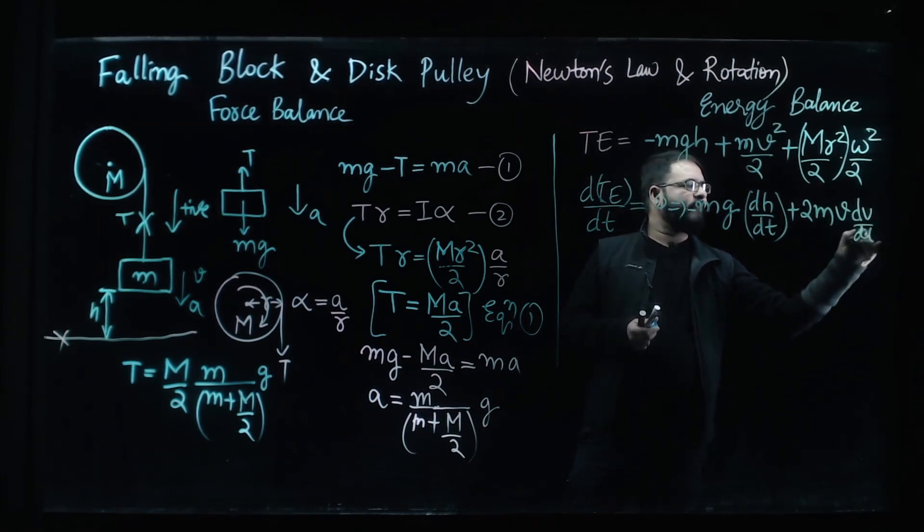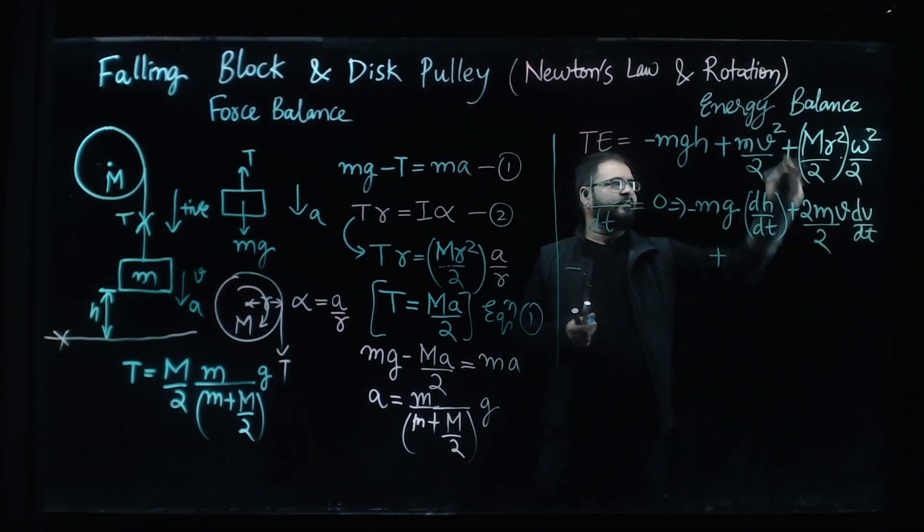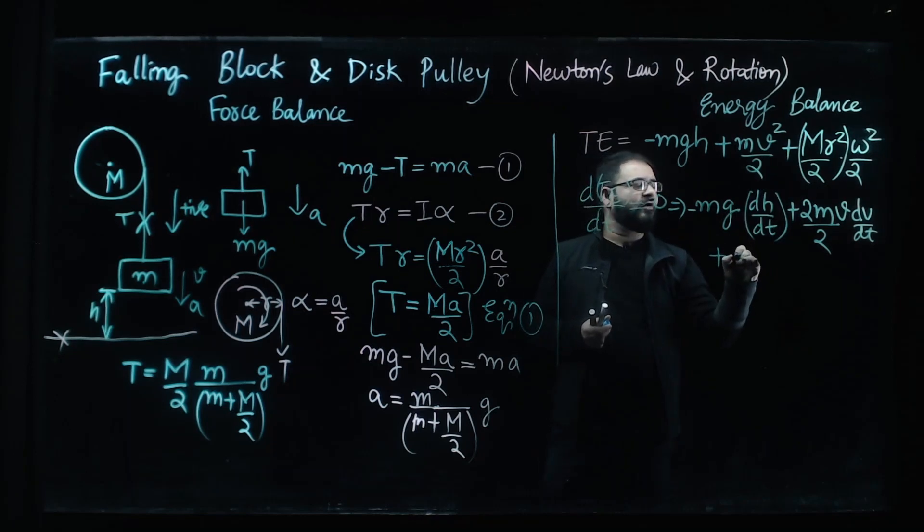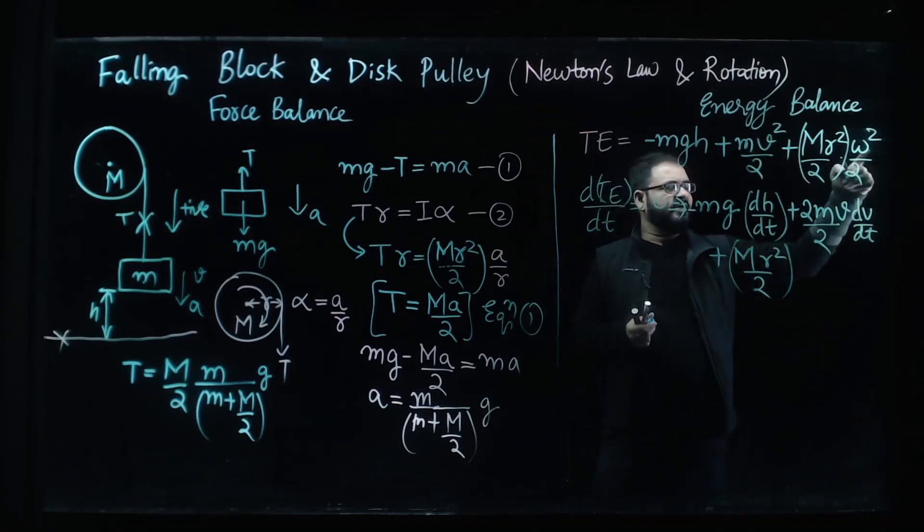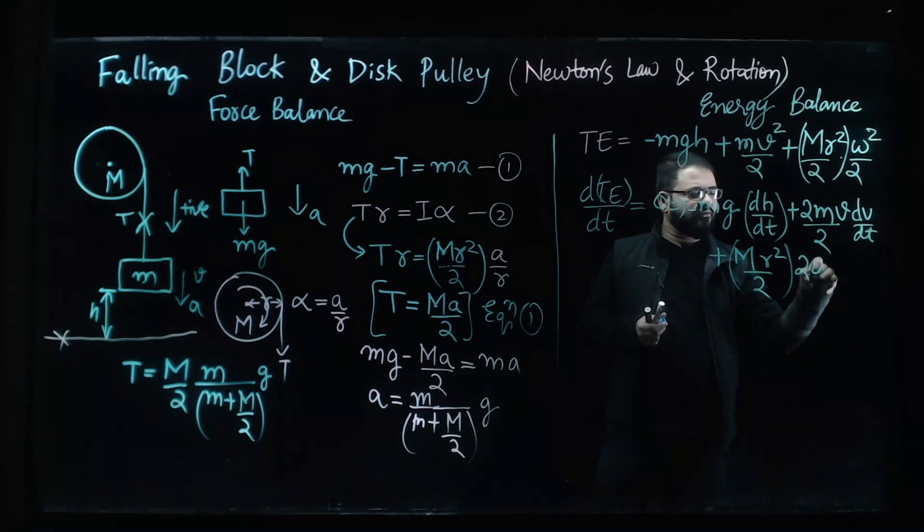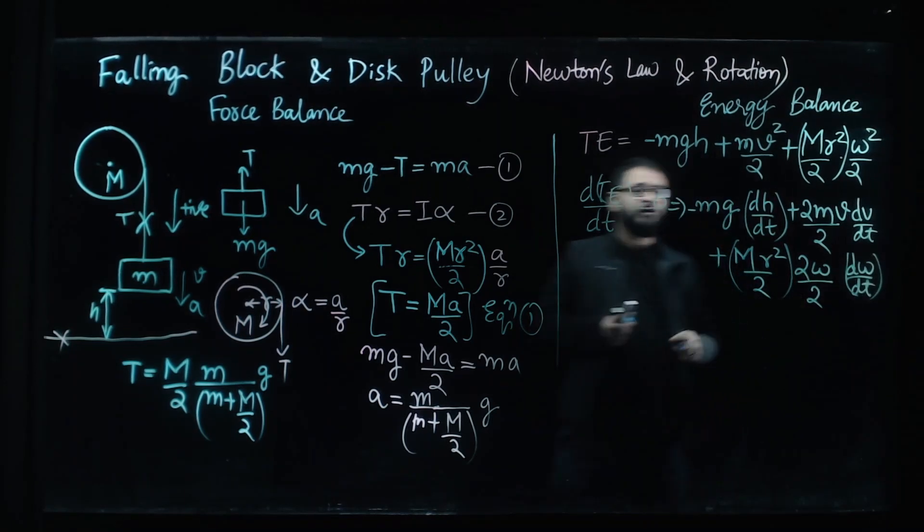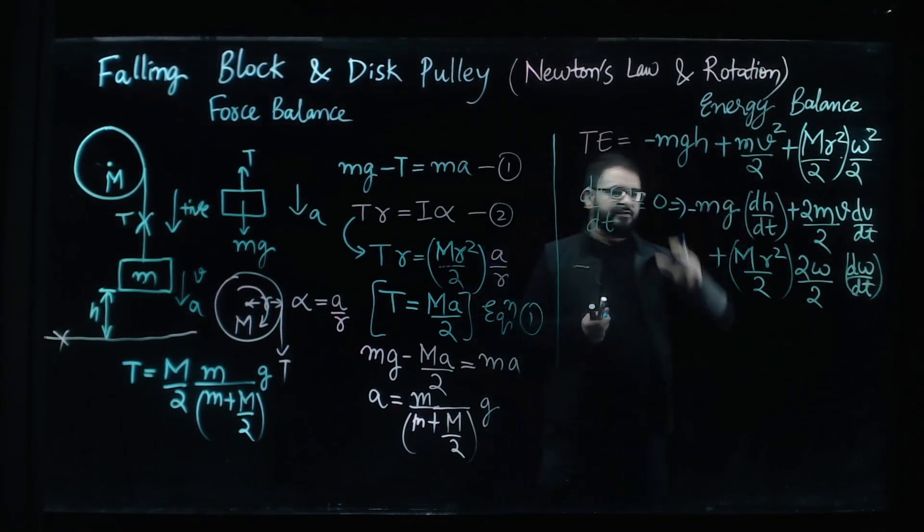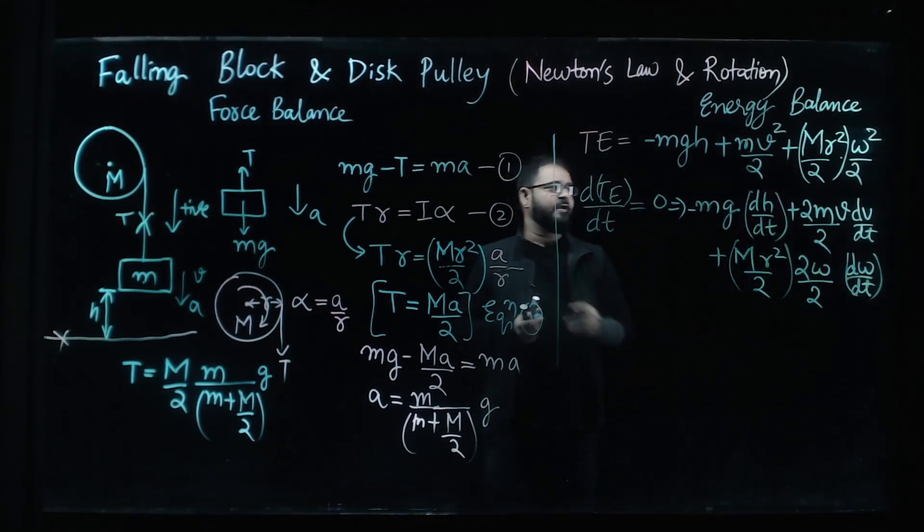Plus the derivative here will involve again mr squared by 2, the whole term, and then the derivative of this omega will get omega and we get d omega by dt and there is a factor of 2. Now this thing is going to go zero and g into v, there is a minus sign here, minus sign here.